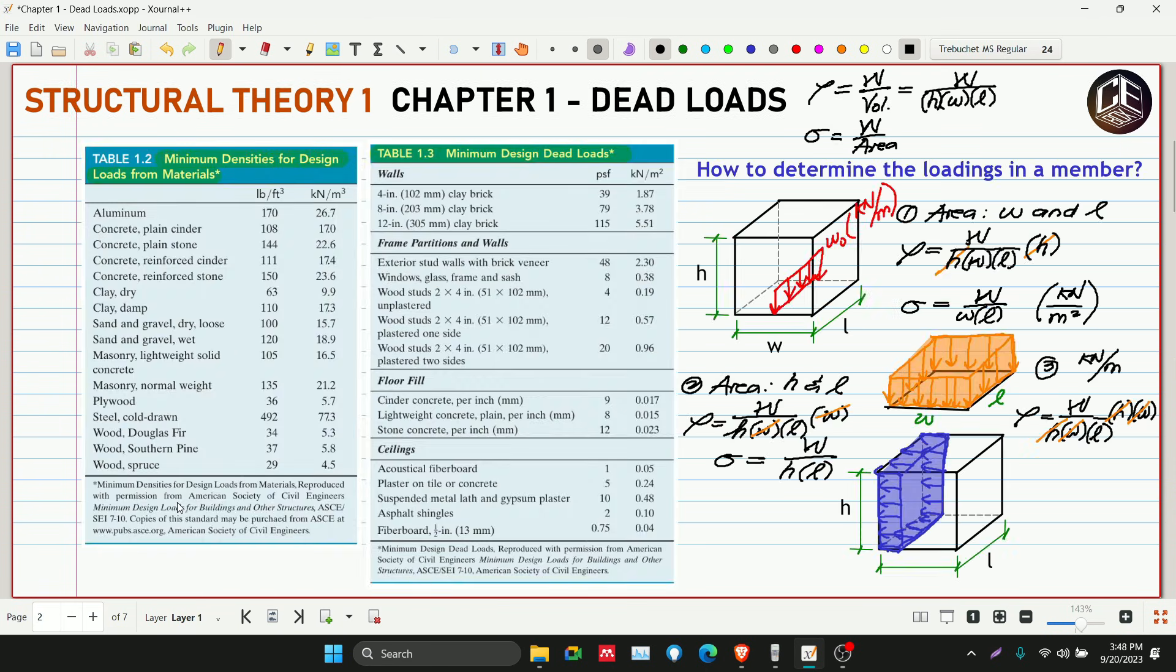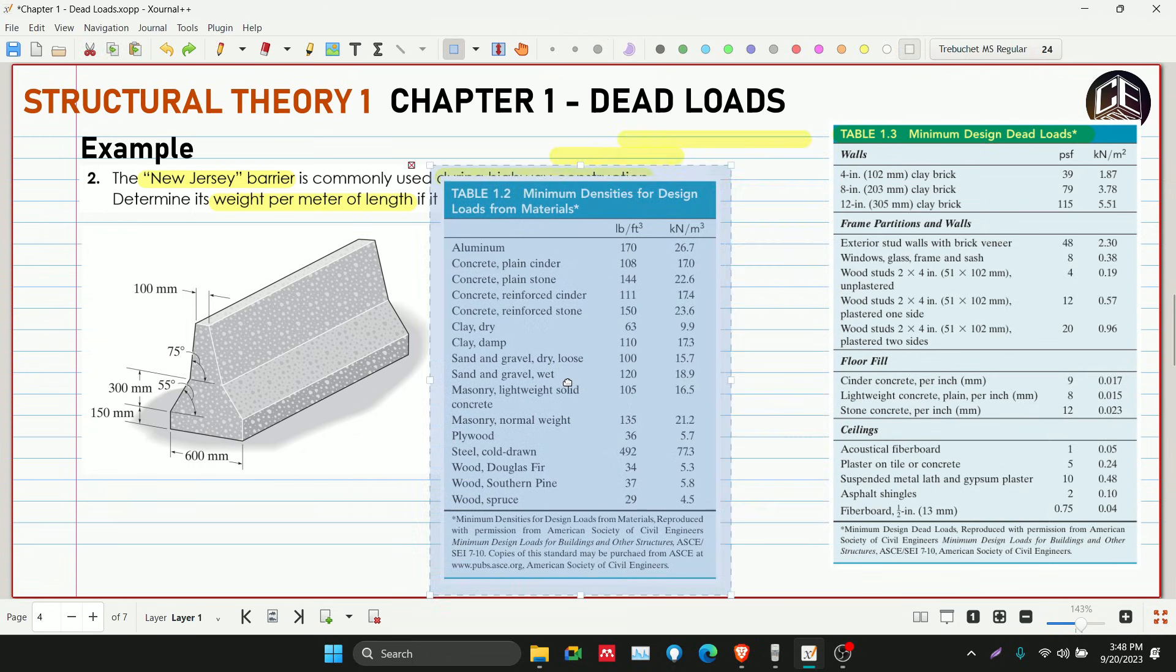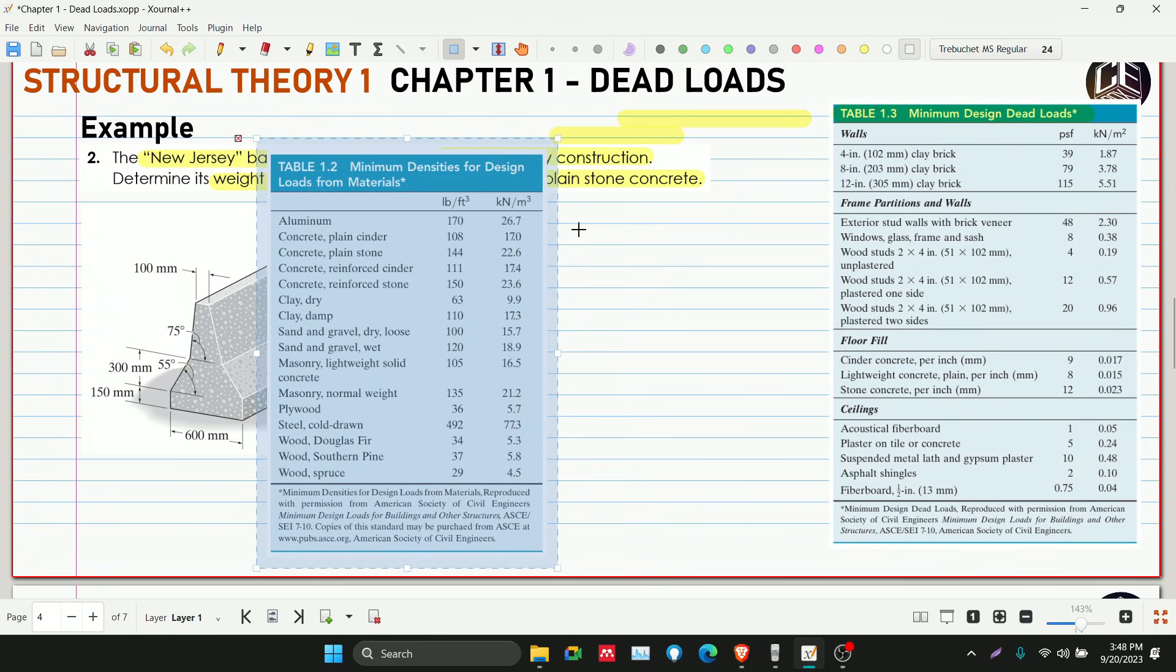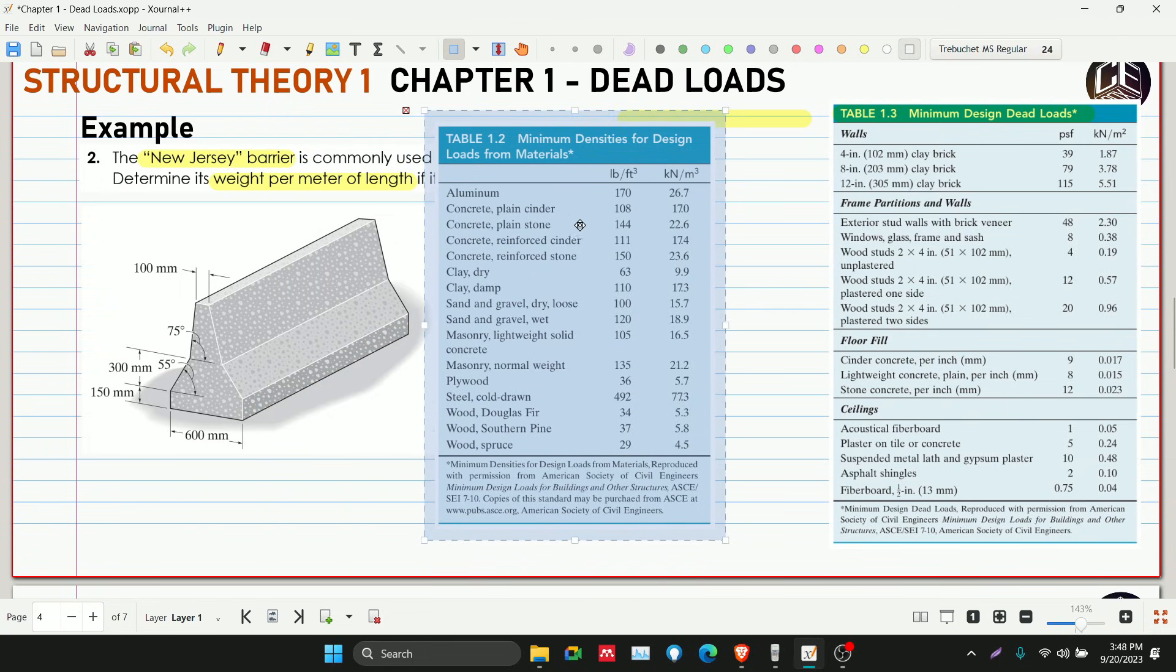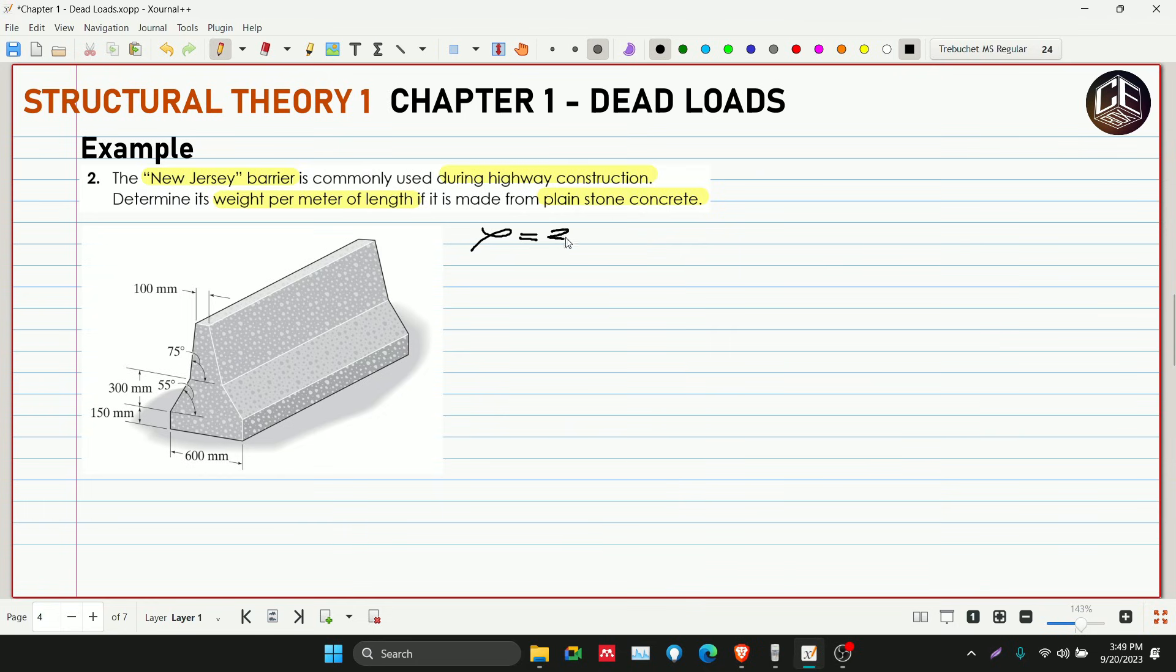So check natin. Siguro copy na lang din natin na. Lightweight concrete. Ayan, dito tayo sa concrete plain stone. Yan ang sabi, plain stone concrete. So this is 22.6 kN per meter cube.